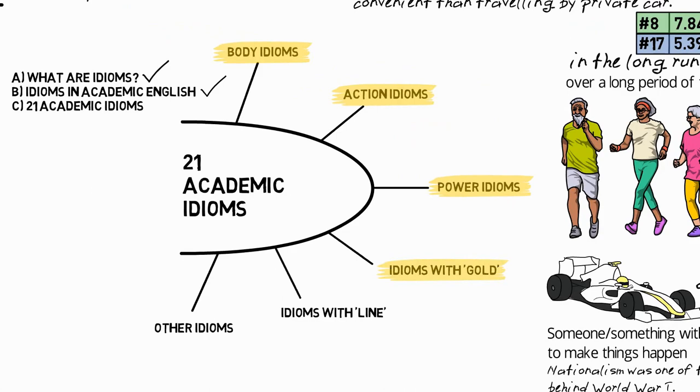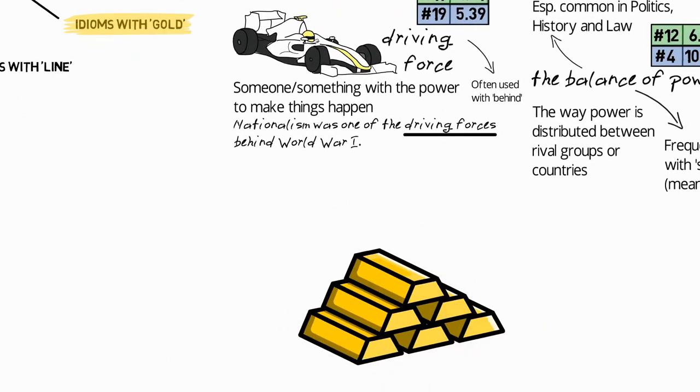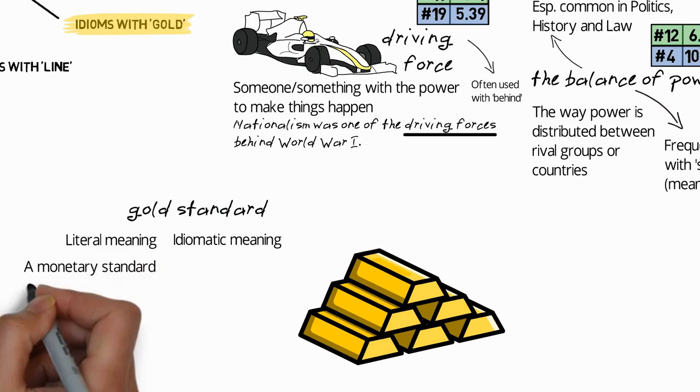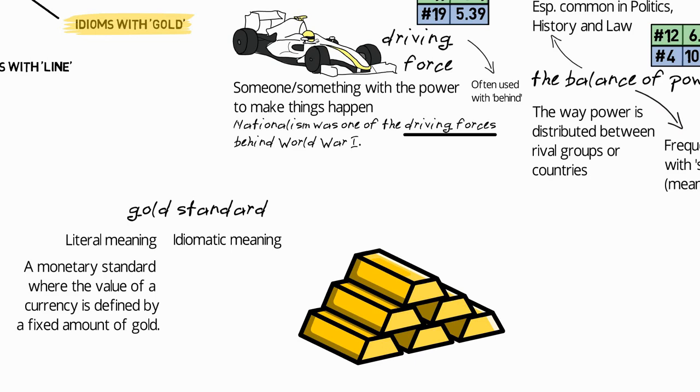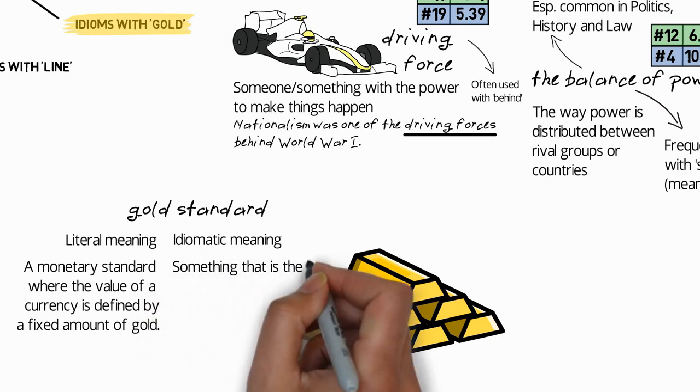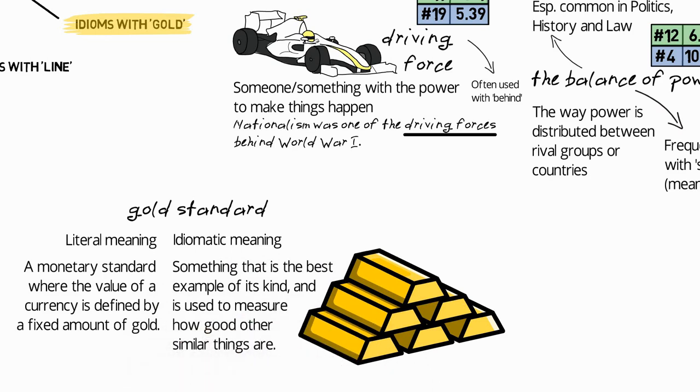Next, let's look at two idioms with the word gold. The first of these is gold standard, and this actually has a literal or real meaning as well as an idiomatic meaning, and it's useful to know both. So the literal meaning is a monetary standard where the value of a currency is defined by a fixed amount of gold. The idiomatic meaning, which derives from the literal meaning, is something that is the best example of its kind and is used to measure how good other similar things are.